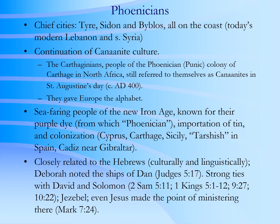One of the most significant cultures to emerge after the Dark Age is the culture of the Phoenicians. Now the Phoenicians are not a nation — they are a number of independent cities well known for seafaring trade, cities such as Tyre, Sidon, and Byblos. Byblos is where we get the word for Bible. The Phoenicians are a continuation of Canaanite culture, and they are very closely related to the Hebrew people, both linguistically and in many ways culturally.